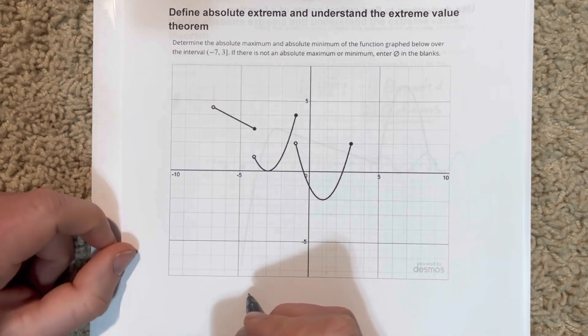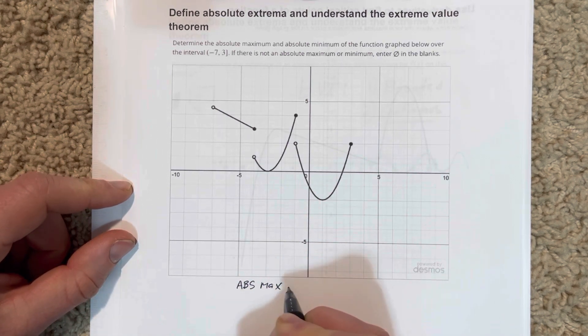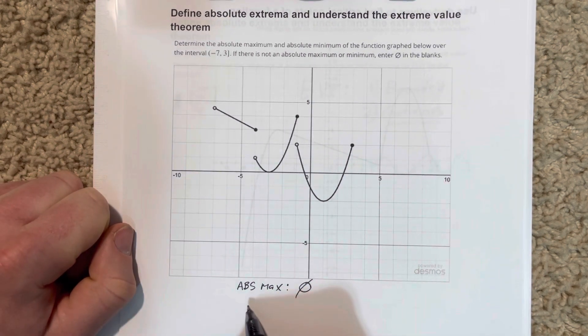So we're going to say that the absolute max does not exist. And then we're going to go ahead and find the absolute min.